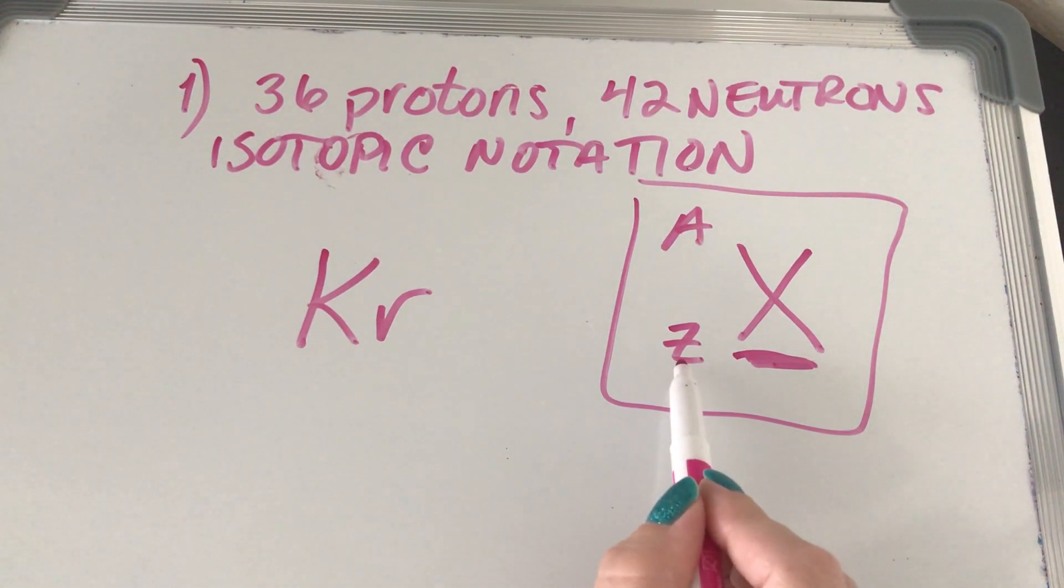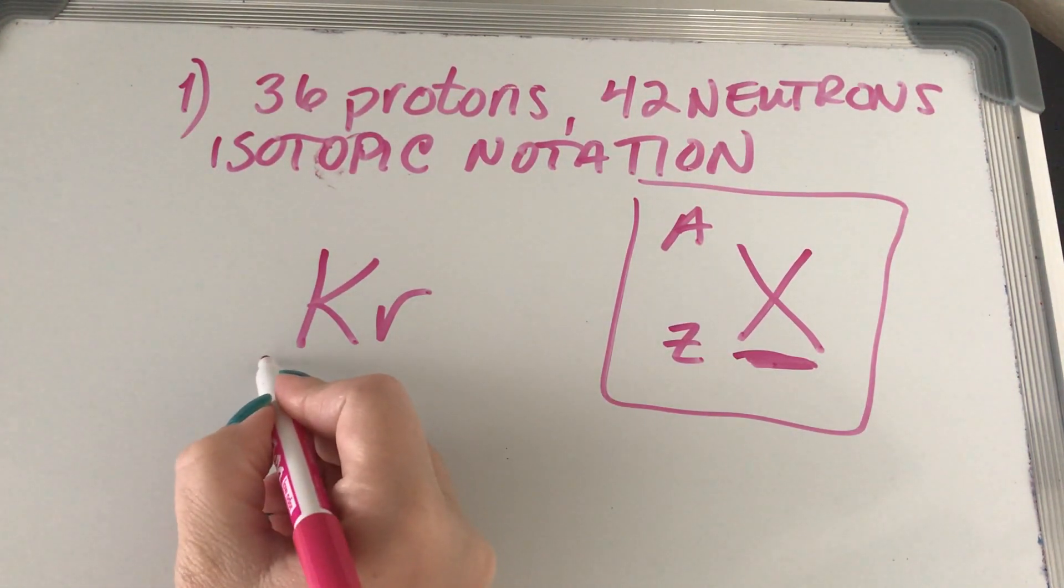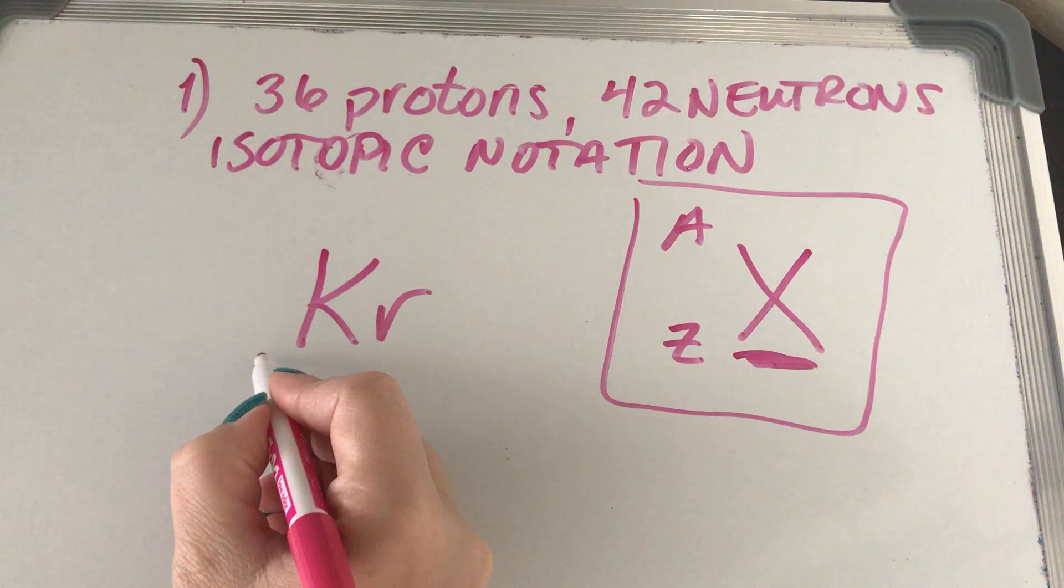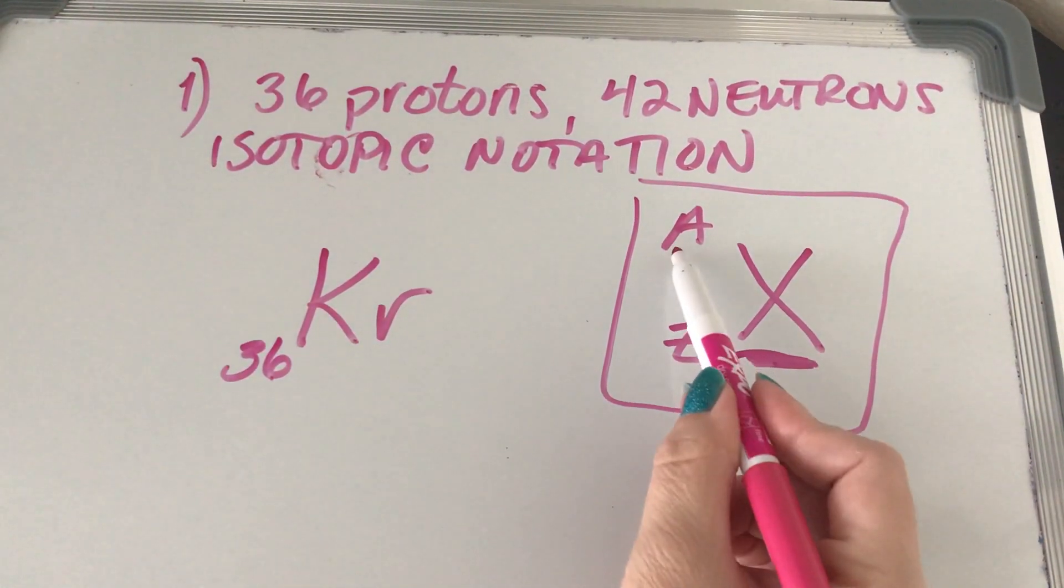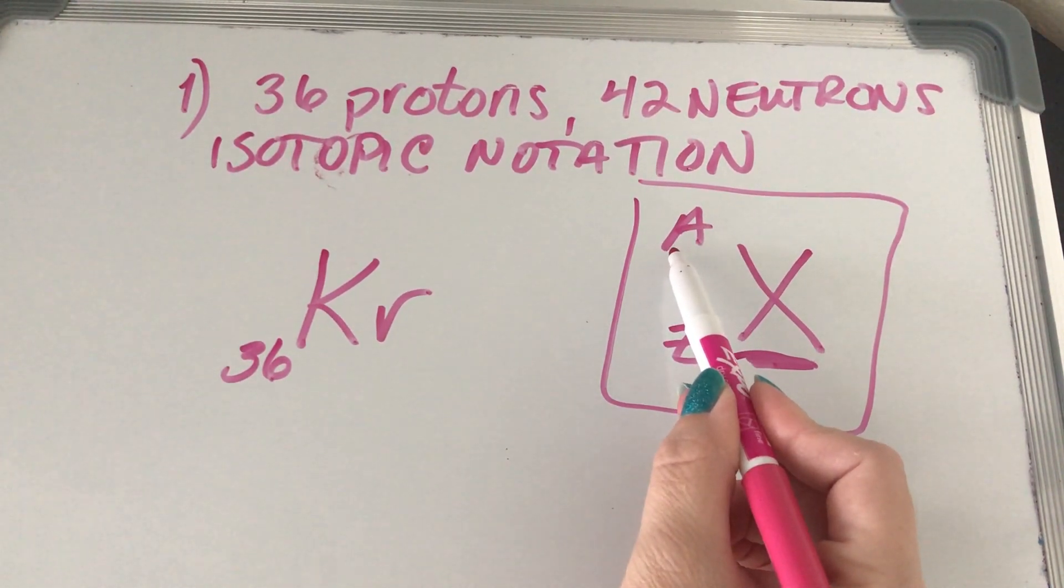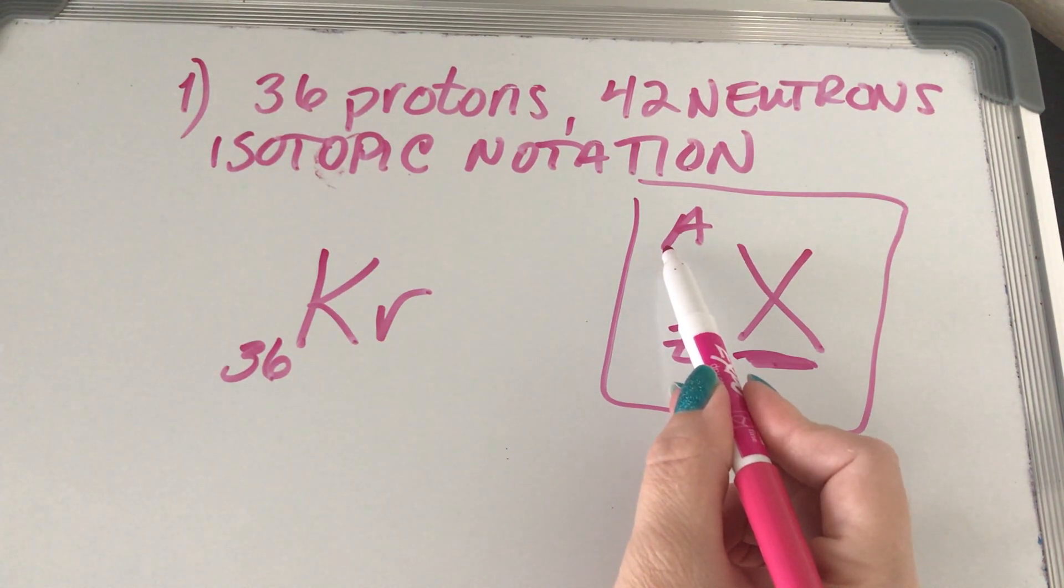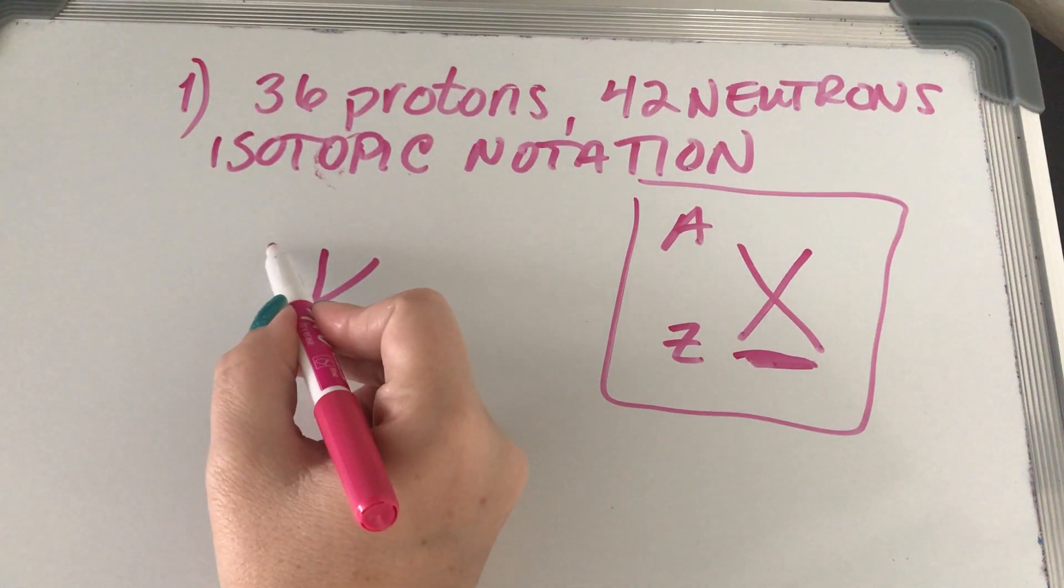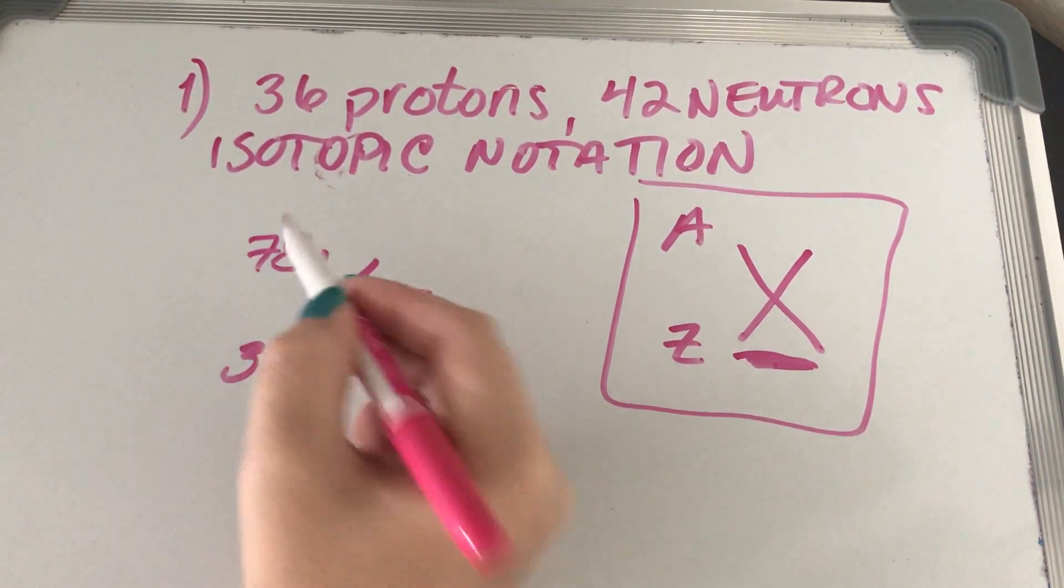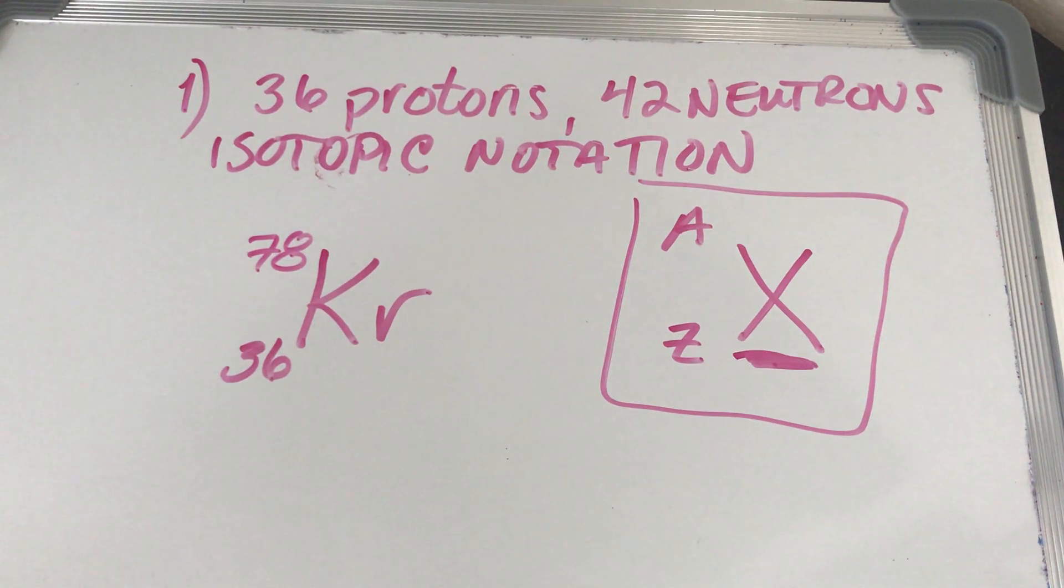Now Z is the atomic number, aka number of protons. So what's going to go down here? 36. And so the last one that we need is A, which is the atomic mass. And how do we find the atomic mass? You add the protons and the neutrons together. Exactly. So what number is going to give you? 78. Blammo. Right, everybody okay with that?